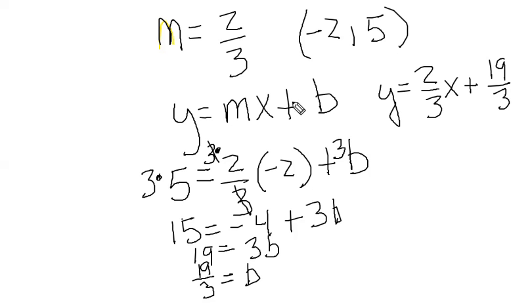So rather than use the point-slope form, we used slope-intercept form, substituting the slope and the one point we had for the y value and x value, solved for b, and then rewrote the equation in slope-intercept form.